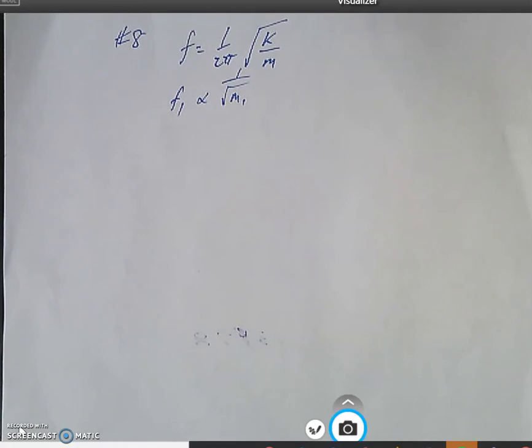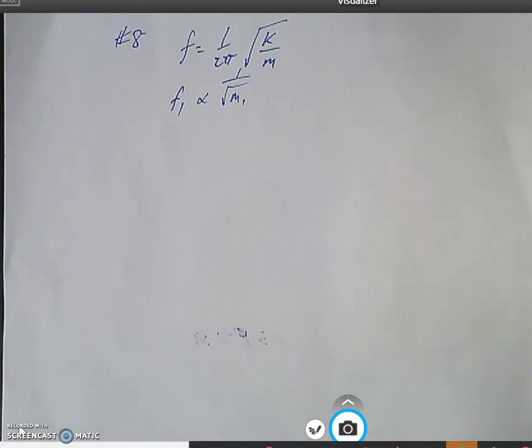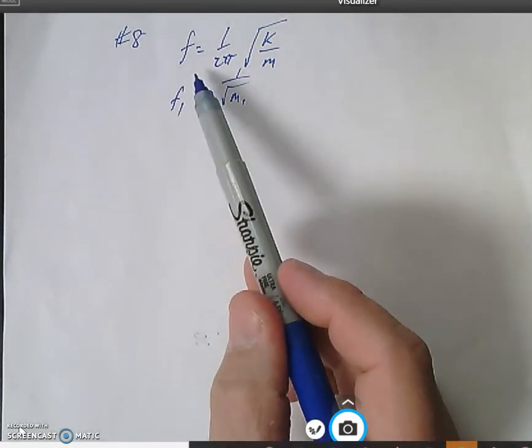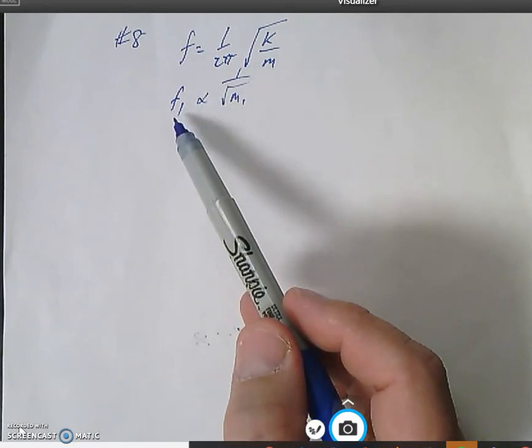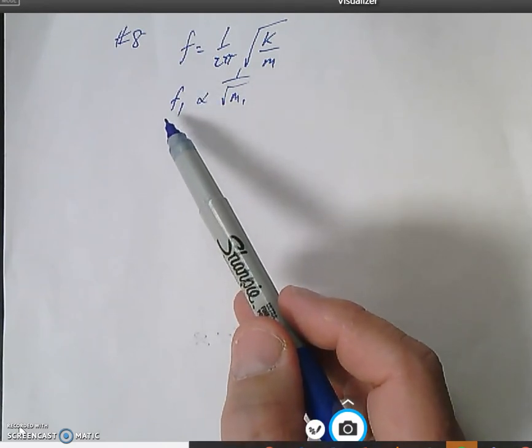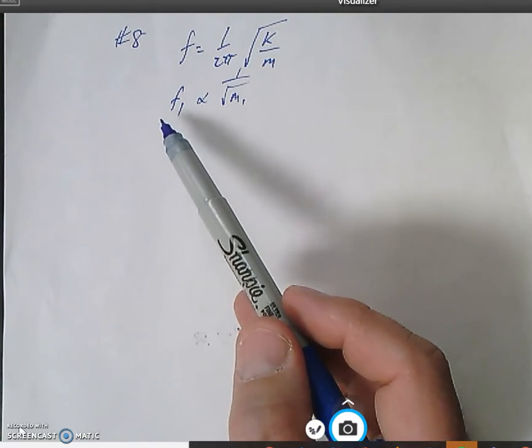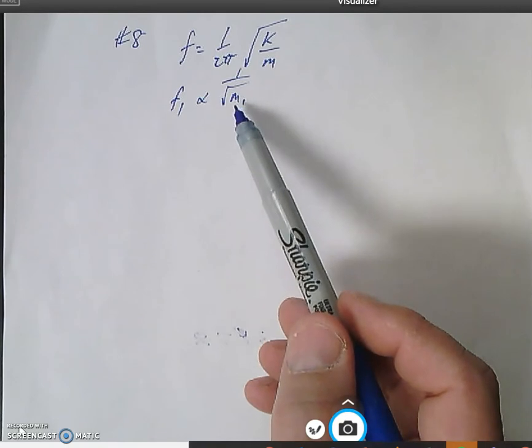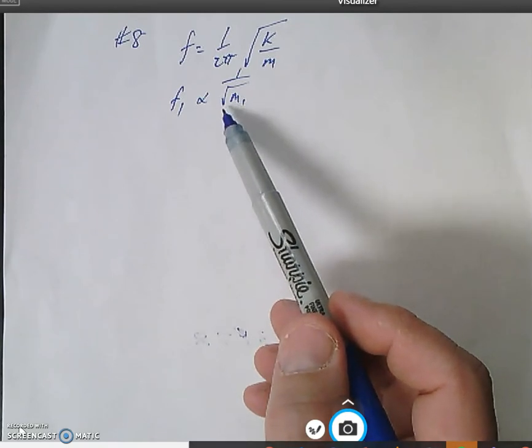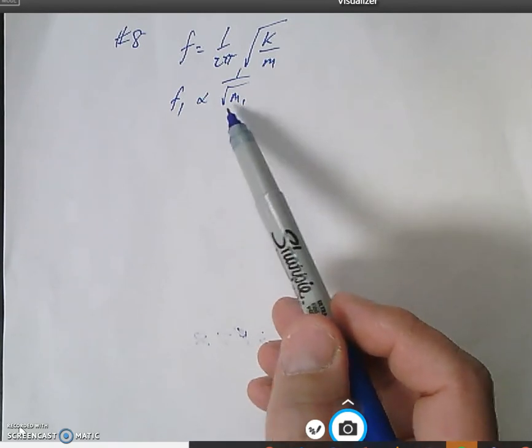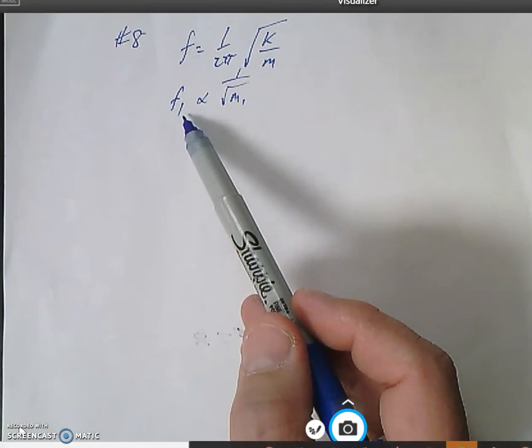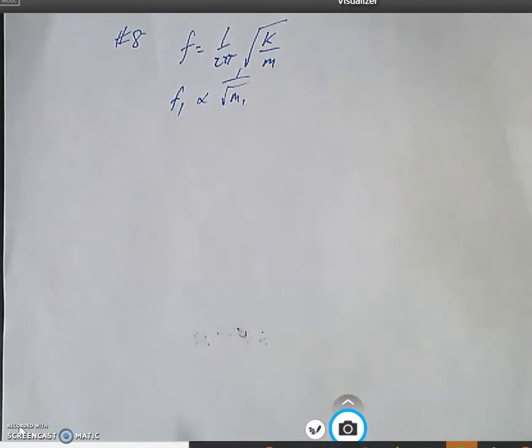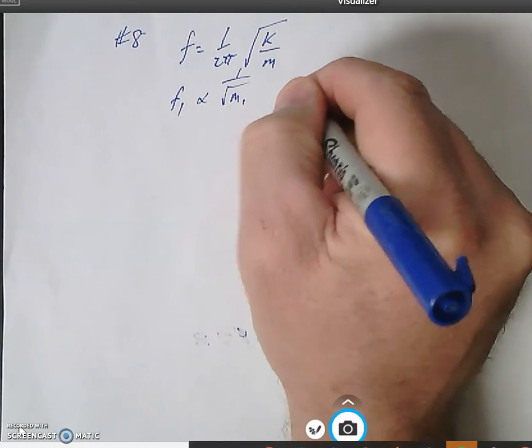Question number eight, we go back to our frequency equation. And basically what this illustrates here is that in question number eight there's two different masses. Well, two different masses will produce two different frequencies. The frequency is inversely proportional to the square root of the mass. So if we're talking about mass one, the frequency that's associated with that is proportional to one over square root m1.